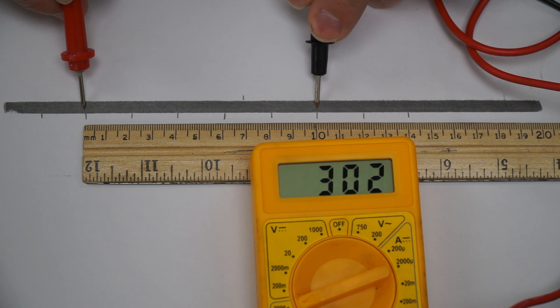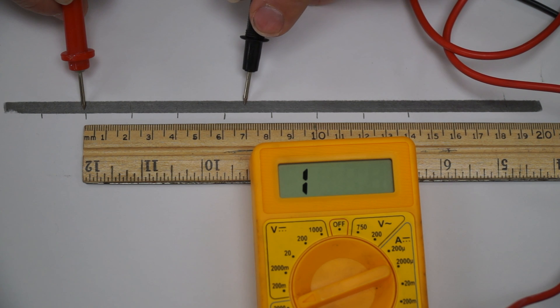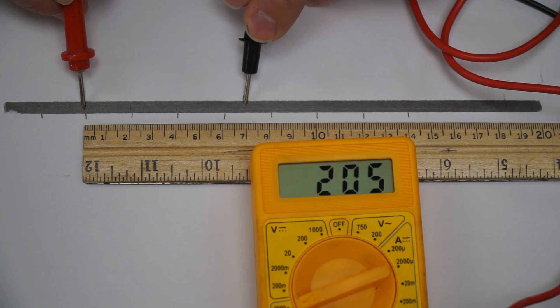Zero to ten, 299. And then that last one, that seven centimeter mark. From zero to seven centimeters, 202.